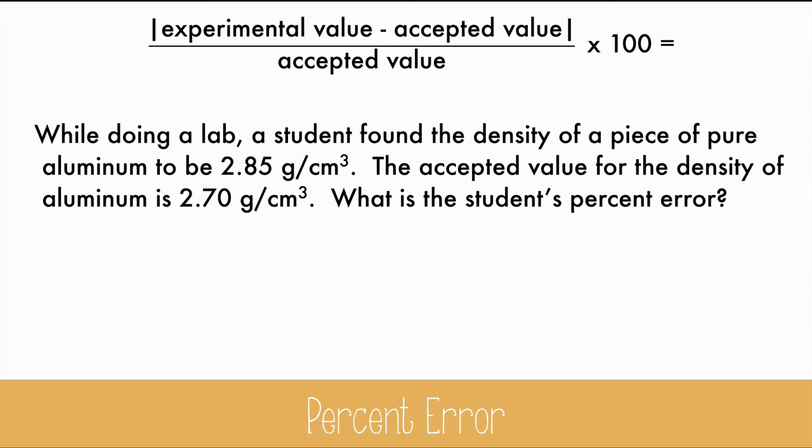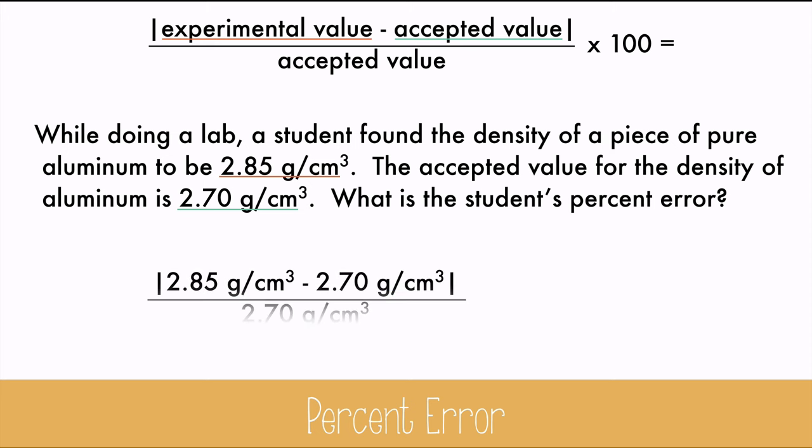The number that the student found from their own experiment is the experimental value. The accepted value for the density of aluminum can be found with a web search or in a book of chemical properties. Plug in the data, multiply by 100, and you get 5.5 repeating, which you can round to 5.56%. This means the student was off by 5.56%, which isn't too bad, but the smaller the percentage, the better the lab technique must be. Zero would be perfect.